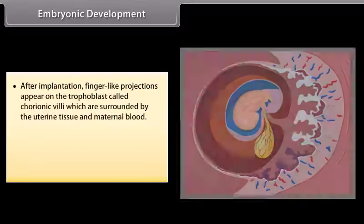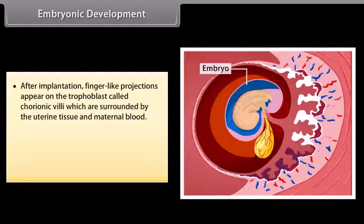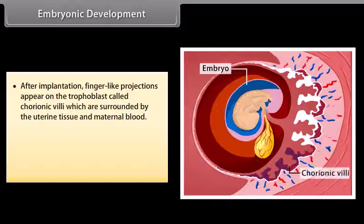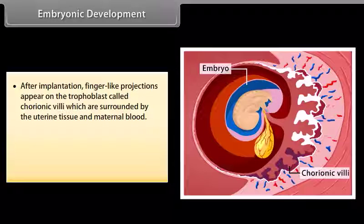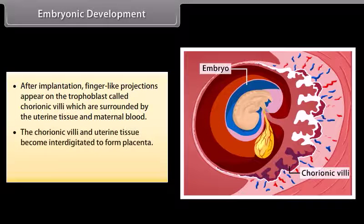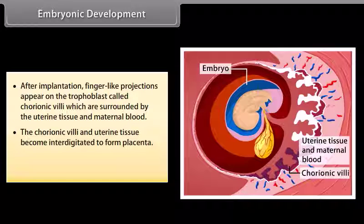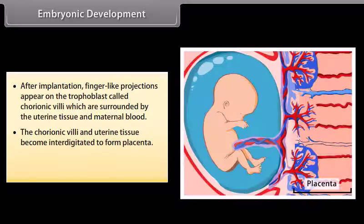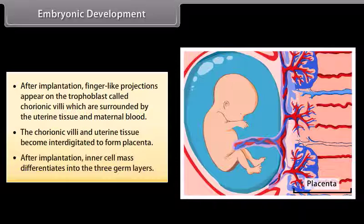After implantation, finger-like projections appear on the trophoblast called chorionic villi, which are surrounded by the uterine tissue and maternal blood. The chorionic villi and uterine tissue become interdigitated to form the placenta. After implantation, the inner cell mass differentiates into three germ layers.